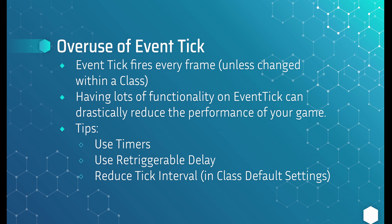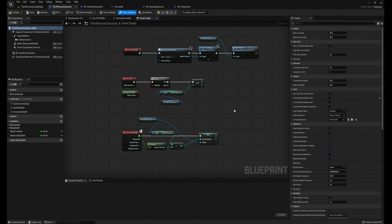It's not that you need to have nothing on there, but really you need to use it sparingly. Some tips on how to reduce your use of event tick: we can use timers, we can use retriggerable delays, and in a pinch you can also reduce the tick interval. A common place where I see people using event tick is they will have some type of health regeneration function so that every frame that their health is not full it's just going to constantly tick up.